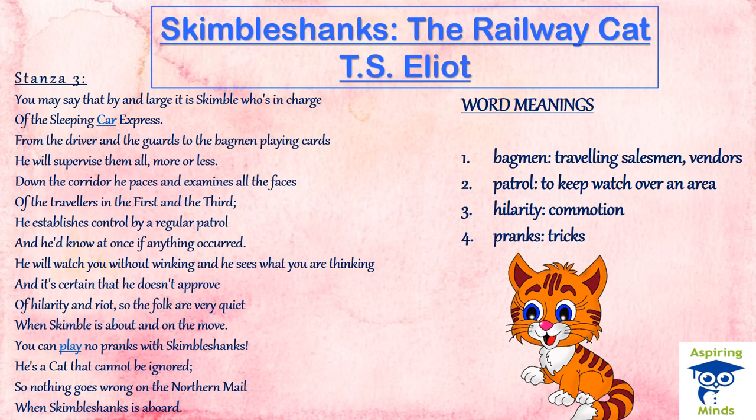Skimble Shanks expects absolute peace and order on the train. He refuses to accept any kind of hilarity — meaning commotion, amusement involving noisy commotion or riot. He wants absolute peace on the train and does not want any kind of disturbance, neither for himself nor for his passengers. His strong presence and vigilance throughout the journey never goes unnoticed and ensures nothing goes wrong. Skimble Shanks is not only responsible and dutiful but also a very strict supervisor — it is as if the principal is walking into your room. Passengers are expected to be in extreme discipline when on board this train.